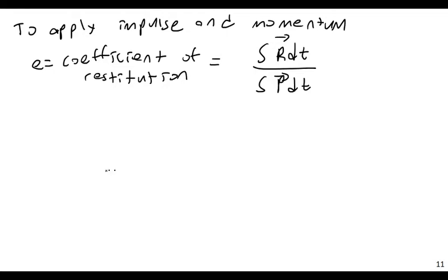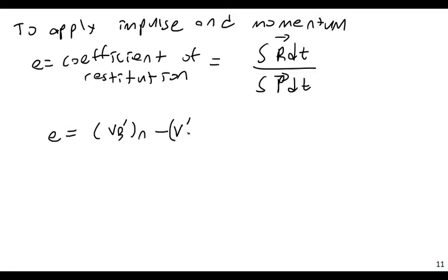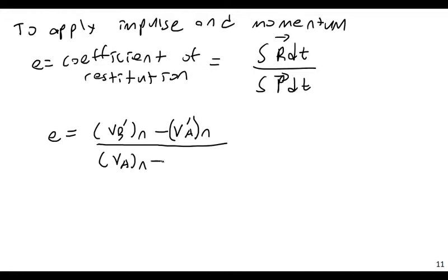The principle to apply here is impulse momentum. R is our deformation force and P is our restitution force. We bring up E, the coefficient of restitution, which is equal to the integral of R dt divided by the integral of P dt. Another way to think of this is E equals VB prime N minus VA prime N, looking at the normal components because that is where the force is applied — it's a normal force, assuming frictionless surfaces — divided by VAN minus VBN.